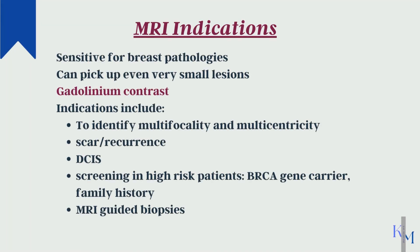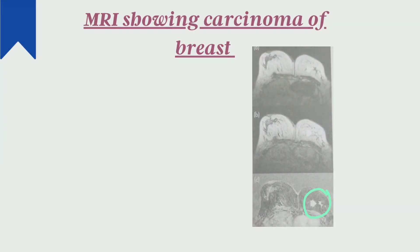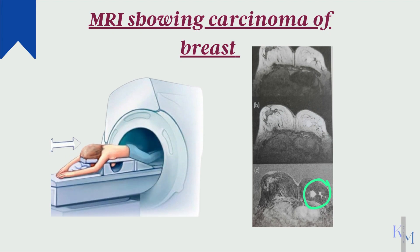MRI is another very sensitive tool for detecting breast pathologies. Because it is expensive, it is not used as a screening modality. Gadolinium contrast is used. It is indicated to identify multicentricity — lesions in different quadrants — and multifocality — lesions in the same quadrant but different foci. It is also used to differentiate between a scar from previous surgery and a recurrence of tumor. In high-risk groups, such as those with a positive family history of colon, ovarian, or breast cancer and BRCA carriers, MRI is used for screening.